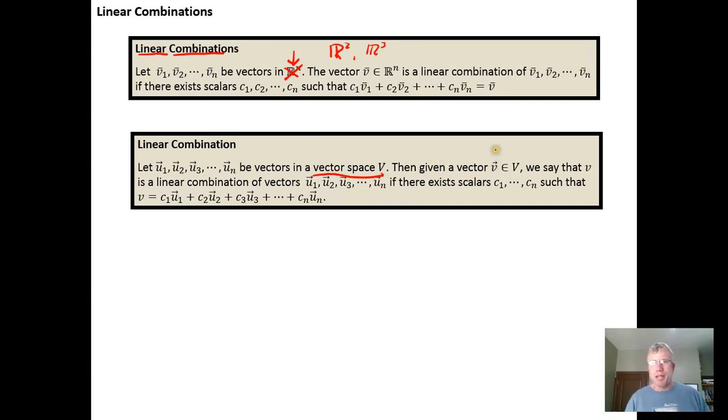Then if we can take any vector V in V, so instead of saying V has to come from R^n, V could come from the set of all polynomials of degree less than or equal to n, or the set of all two by two matrices, whatever our vector space happens to be.